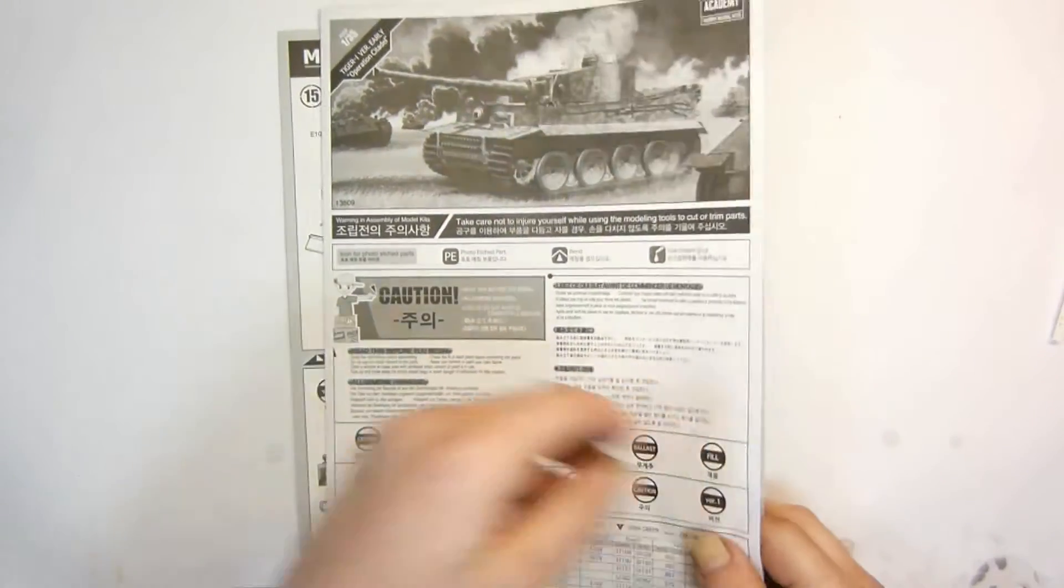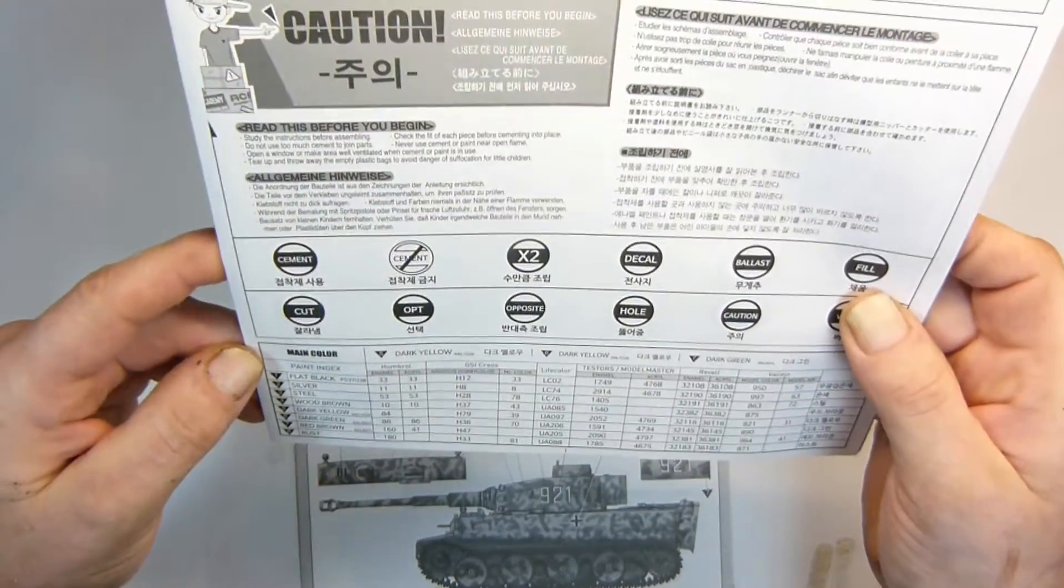Starting with the instructions, there's two booklets. The main booklet for the actual build instructions and the second booklet which has your sprue maps, markings, and paint layouts with the three tanks provided.